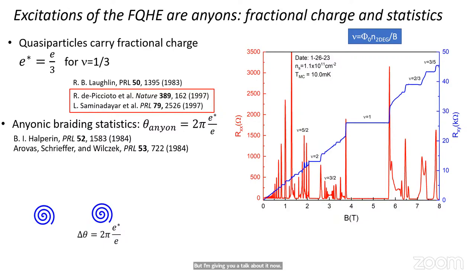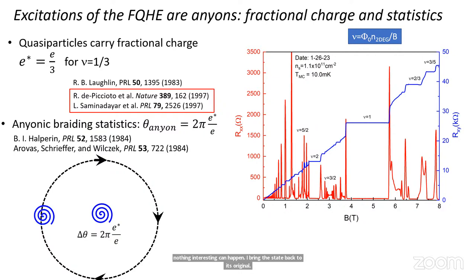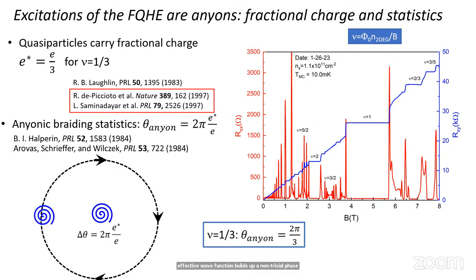Just so everyone's clear, what I mean by statistics, I'm considering this little model system where these little spirals represent localized excitations, quasiparticles. And if I take one around the other, that's equivalent to two exchanges, braiding one around each other. You would think that nothing interesting can happen. I bring the state back to its original configuration, so there can't be any memory of this or knowledge that I have done this. But yet, for these anyons, the effective wave function builds up a non-trivial phase given by two pi e star over e. And for the state I'll primarily talk about, nu equals one third, this corresponds to two pi over three. So keep that number in mind when we actually start looking at data. I should see an anionic phase of two pi over three.